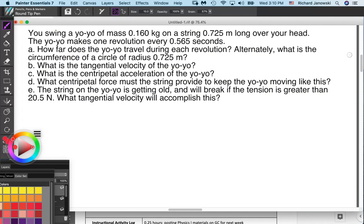So a few things to figure out. Let's start with step A, Part A. How far does the yo-yo travel during each revolution? Alternately, what is the circumference of a circle of radius 0.75 meters? So what we're looking for is the distance, which actually is the circumference of this circle. It's a distance, it'll be in meters.